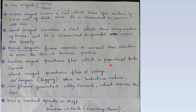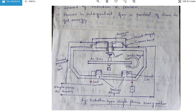Series magnet produce flux which is proportional to the current. And shunt magnet produce flux which is proportional to the voltage. Jo shunt magnet use kiya gaya hai, jo flux produce karega, woh proportional to the voltage hoga. And jo series magnet use kiya gaya hai, jo flux produce hoga, that is proportional to the current.